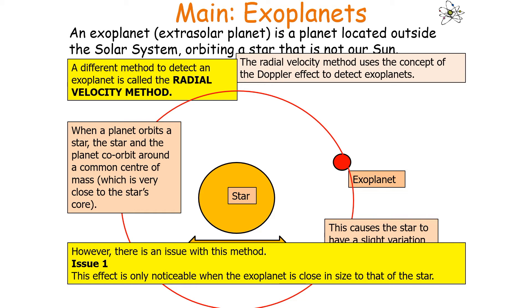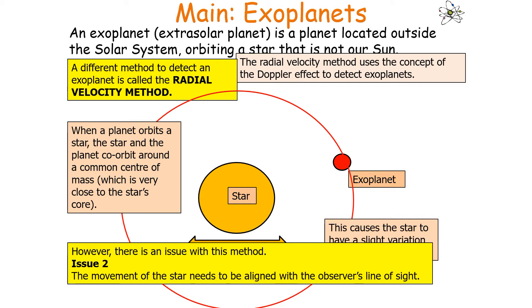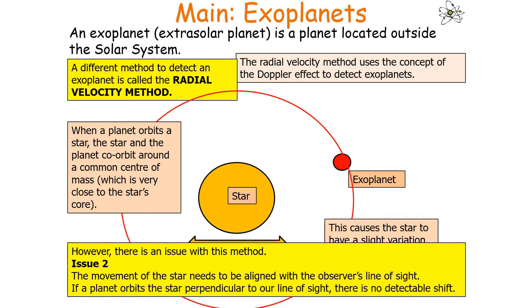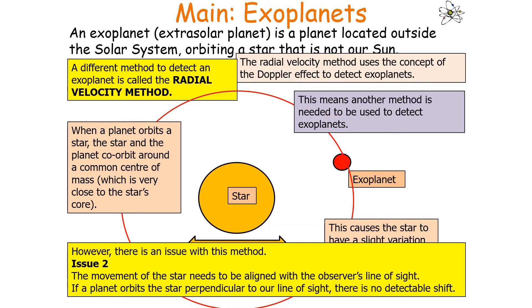There are issues with this method. The effect is only noticeable when the exoplanet is close in size to that of the star, so this method can only really be used to detect Jupiter-like planets as opposed to Earth-like planets. The second issue is that the movement of the star needs to be aligned with the observer's line of sight. If the planet orbits the star perpendicular to our line of sight, there will be no detectable shift. To get a measurable result, the star must orbit edge-on to the viewpoint of the Earth.